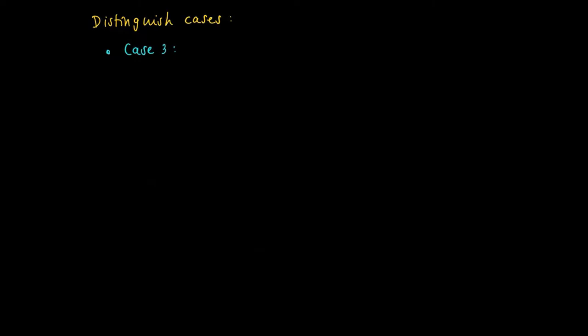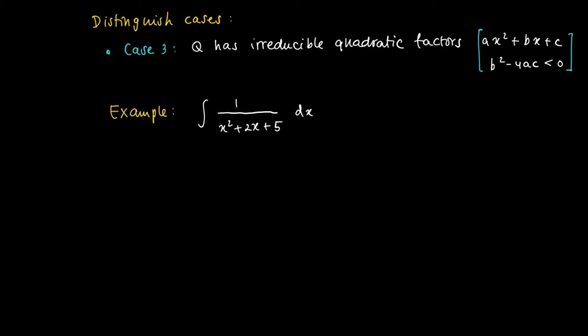So I hope you're still with me where we can even discuss more challenging cases. Case 3 is the case where we have irreducible quadratic factors. What does it mean? Well, Q has factors ax squared plus bx plus c, and such a quadratic term is irreducible if only the discriminant is smaller than zero, which means that ax squared plus bx plus c equals zero has no solution, so we cannot factorize ax squared plus bx plus c.